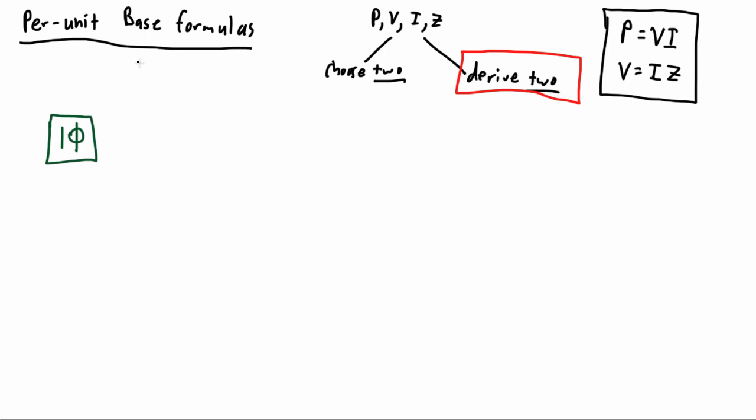Our first formula is the base current formula, which is very simple: current equals base KVA over base voltage in KV. This is a simple application of the P equals VI formula to derive current.